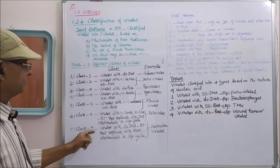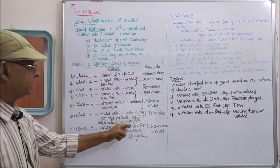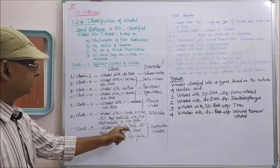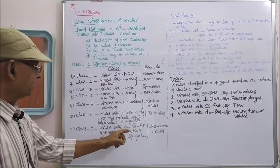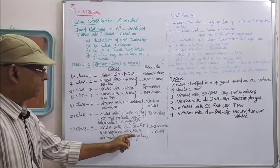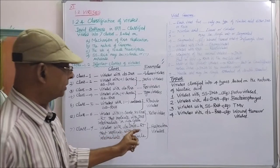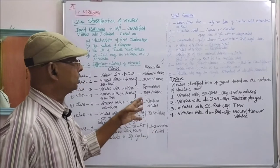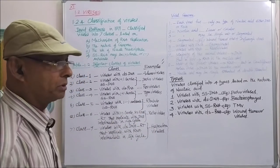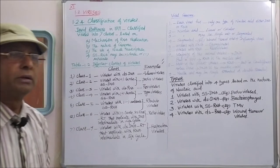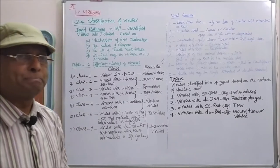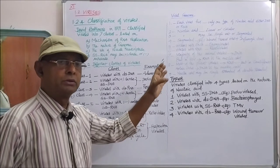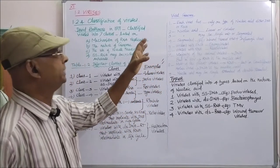Class seven: viruses with double-stranded DNA. These are all the seven classes classified by David Baltimore. Now we will move on to the viral genome.